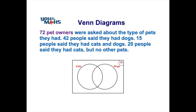Let's put the information from the question into the Venn diagram. The first piece of information is that there are 72 pet owners. We're going to put that number in the rectangle but outside the circles, because that 72 represents everybody inside the Venn diagram — people that own a cat, a cat and a dog, or just a dog. The 72 is placed outside the circles because it represents the entire Venn diagram, or what's called the universal set.